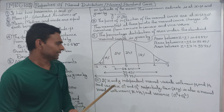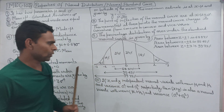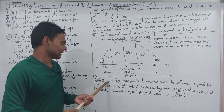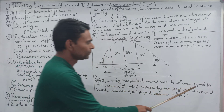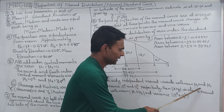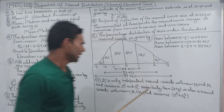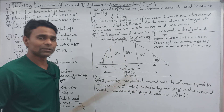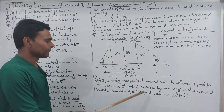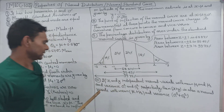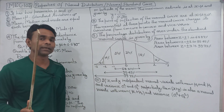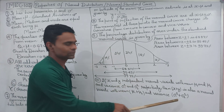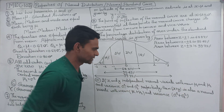If x and y are independent normal variables with means mu1 and mu2, and variances sigma1 squared and sigma2 squared respectively, then their sum x plus y is also a normal variable with mean mu1 + mu2 and variance sigma1 squared + sigma2 squared.